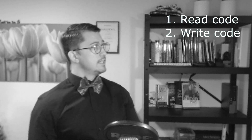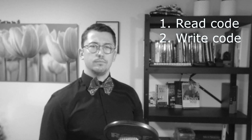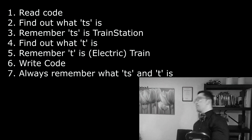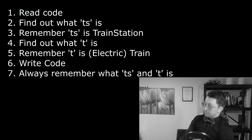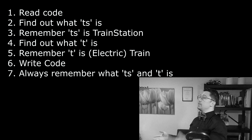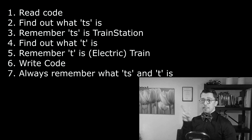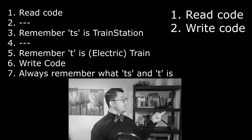Let's now look at the workflow if you did not have shortened variable names. Step one: you read the code. Step two: you write the code. There is no step three. So if we compare: with shortened names you have to read the code, find out what TS is, remember TS, find out what T is, remember T is electric train, write the code, and keep remembering it. Even if you're a domain expert who already knows TS is train station and T is electric train, you're only cutting two steps — it's still more work than the newbie reading readable code.